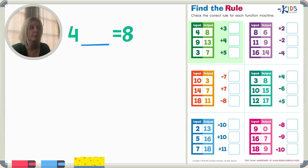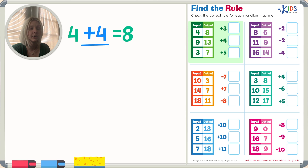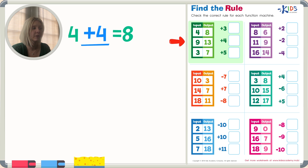Let's try the next one — plus 4. 4 plus 4 equals 8. Does that make sense? I know that's correct because I remember my doubles: 4 plus 4 equals 8. So I know that's the correct answer. But the rule we pick has to make sense for each one of the equations in our function machine, so I'm going to plug in plus 4.